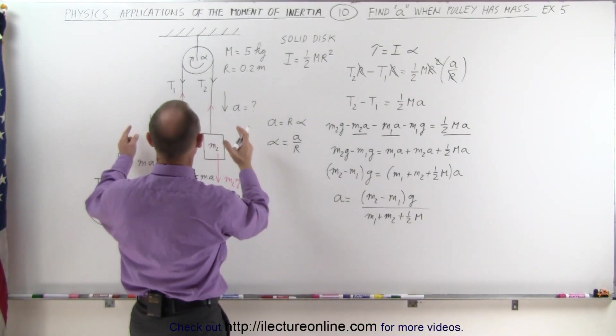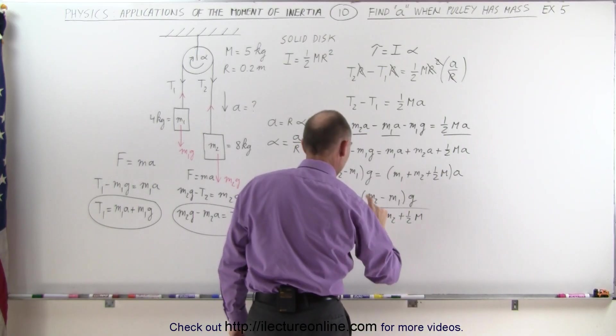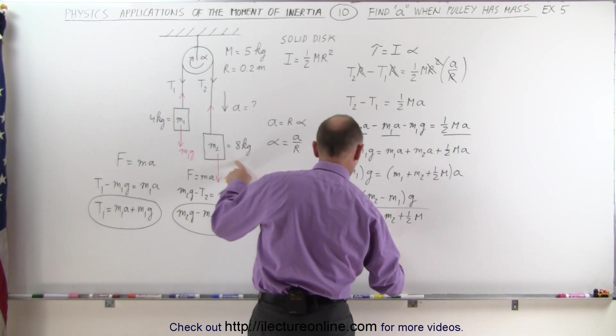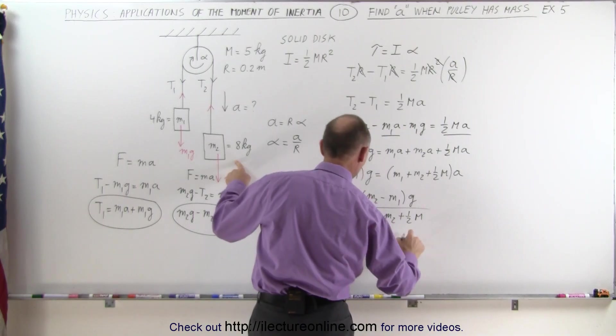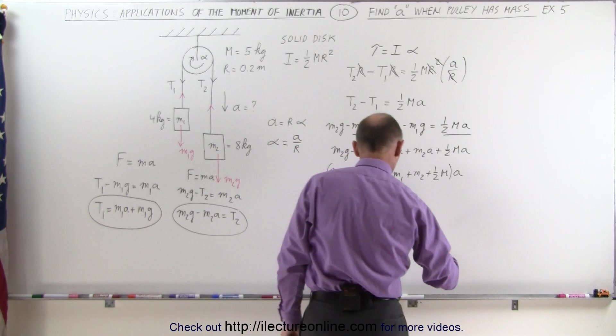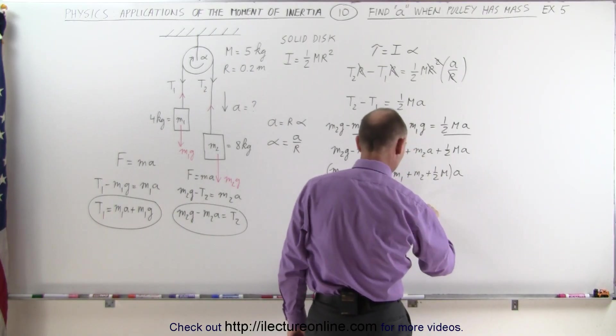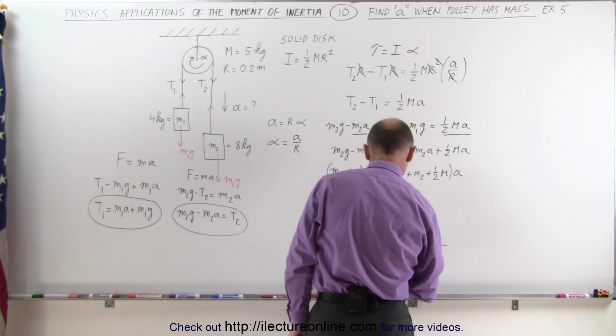Since we know what all the masses are, let's go ahead and plug in the numbers. We get the acceleration is equal to M2, which is 8, minus M1, which is 4, divided by M1, which is 4, plus 8, plus 1 half times the mass of the pulley, which is 5, which is equal to 4, and we have to multiply times G, I can't forget G there. So it's 4 divided by 12, half times 5 is 2 and a half, that's 14 and a half, 14.5 times G.